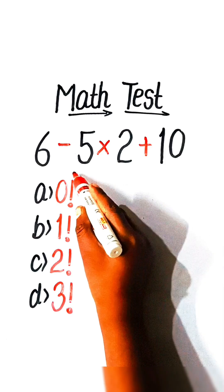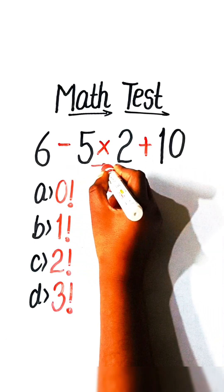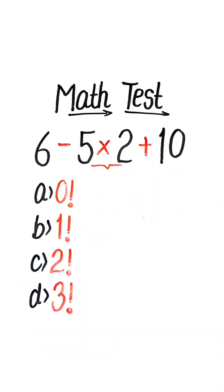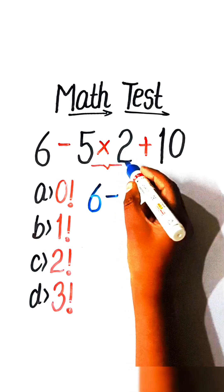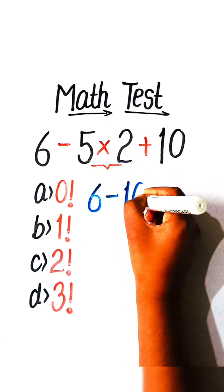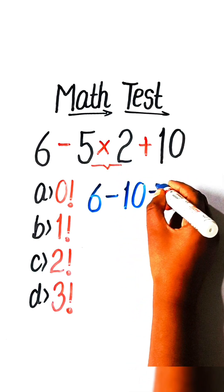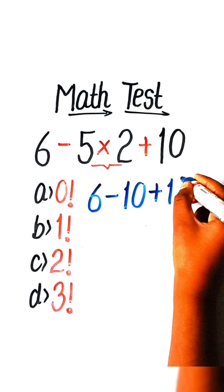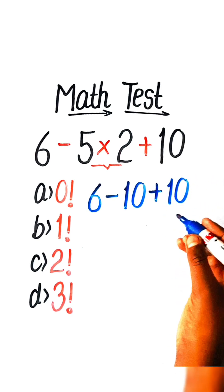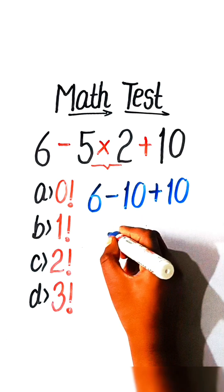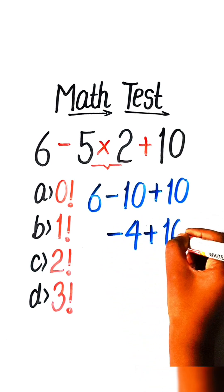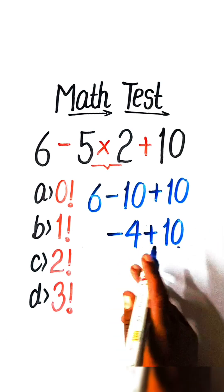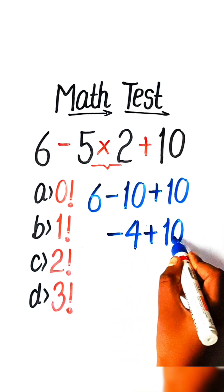So let's solve this. First we have to multiply, so we will write here 6 minus — 5 twos are 10 — plus 10. 6 minus 10 is minus 4, plus 10. We have the plus sign with the greater number.